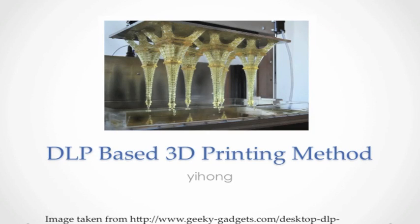Welcome to episode 9. This week I'll be talking about the DLP based 3D printing method. DLP stands for digital light projection. This is a bit similar to last week's topic on SLA — stereolithography apparatus — except that this uses a projector instead of a laser. So let's begin the episode.